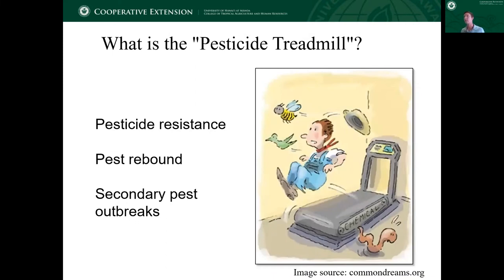Part of why we want to shift away from using a strictly chemical approach is this idea of the pesticide treadmill. When you're on a treadmill, you start moving and get going faster and faster. With the pesticide treadmill, it's the same kind of thing — we're relying on a chemical pesticide, and then we start to see things like pesticide resistance, pest rebound, or secondary pest outbreaks. As these different issues with pests come up, we find that we need to use more chemicals, spray more often, or use stronger, more toxic pesticides. So that treadmill just kind of builds on itself, and we end up in a feedback loop or cycle.